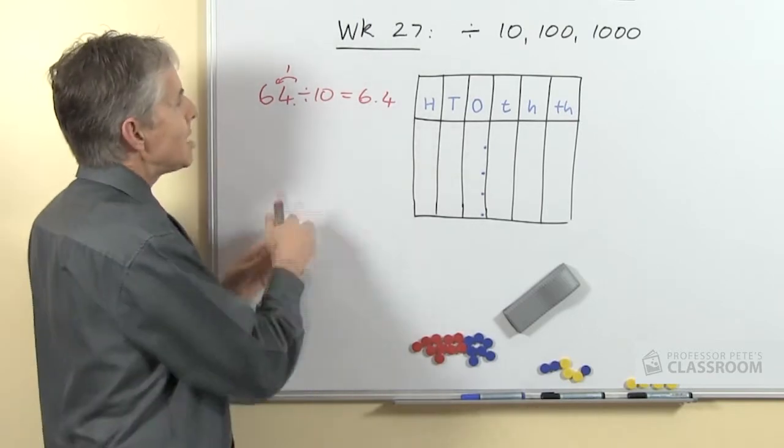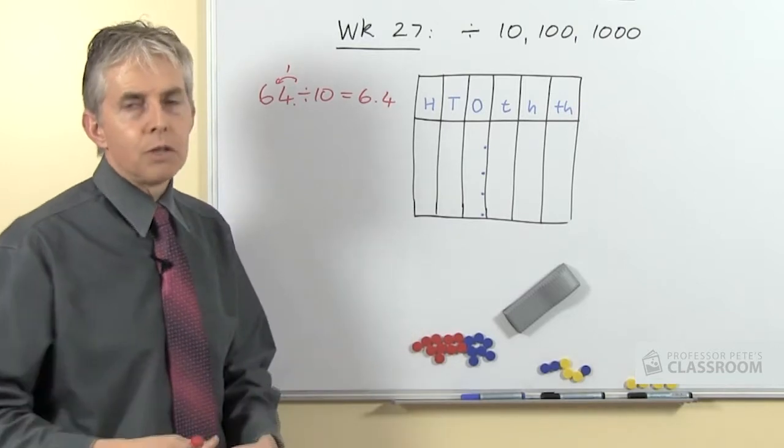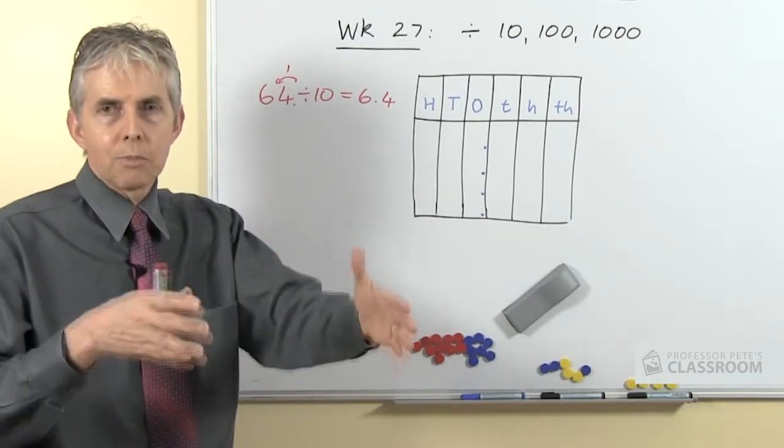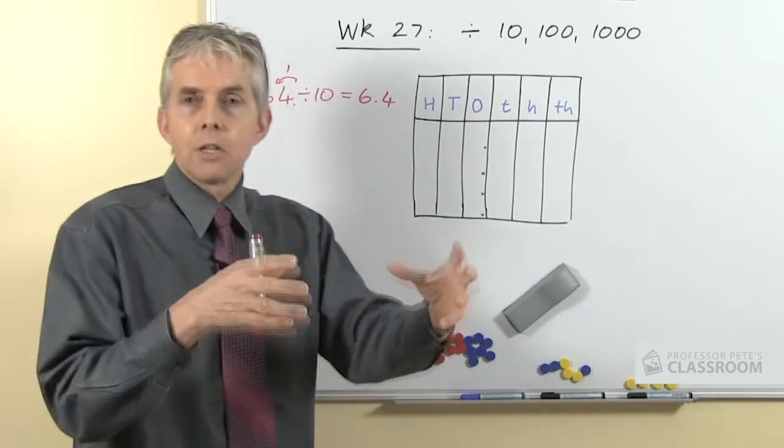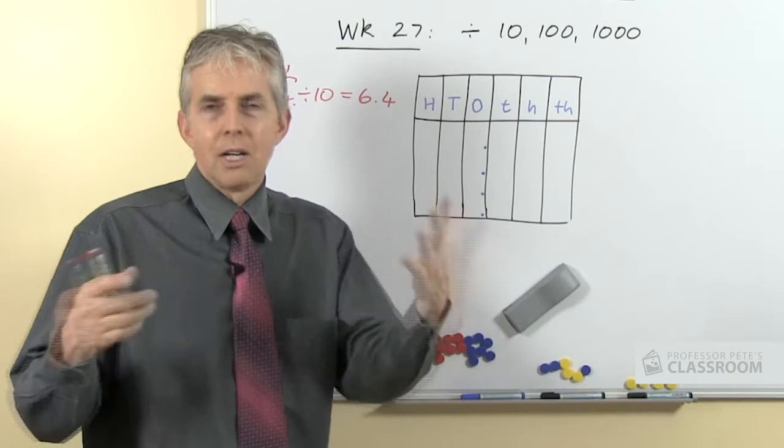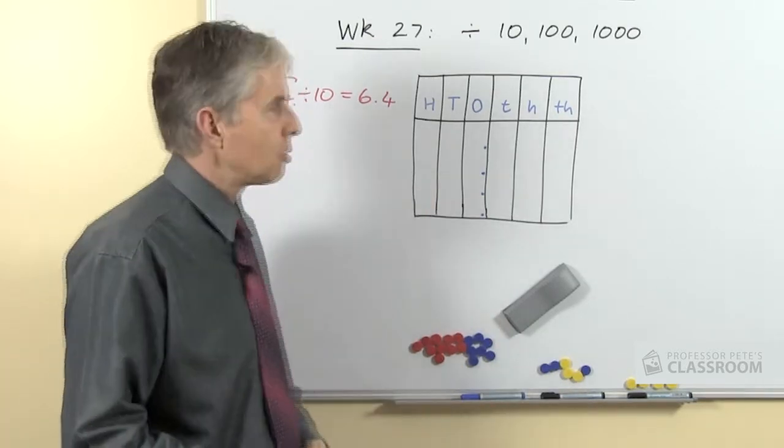So we need to impress upon our students the fact that the values are changing. If we're dividing by 10, we're getting a tenth part, so every number in every column will move into the next column because that's one-tenth of the size, and we can establish that with other methods—base 10 blocks and that sort of thing.